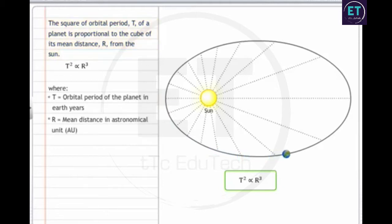Where T is the orbital period of the planet in earth years, and r is the mean distance in astronomical units. An astronomical unit is approximately 93 million miles or 150 million kilometers.